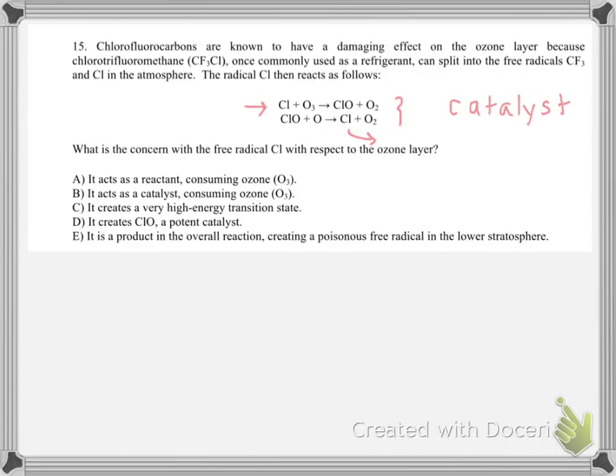And you can see that in the mechanism too. Because it's regenerated, it's not just a reactant. And by acting as a catalyst, it actually will lower the activation energy. So the transition state would actually be at a lower energy. So C doesn't make sense. CLO is made and then used, which makes it an intermediate. And then E, it's not a product either really. So E is out. It's just B.